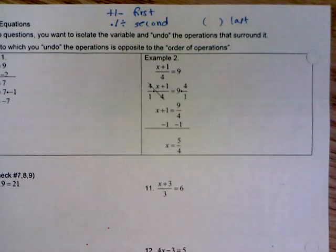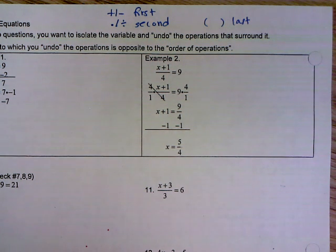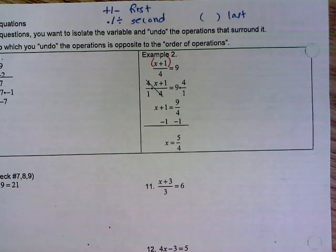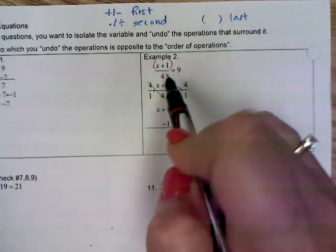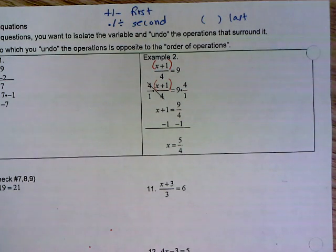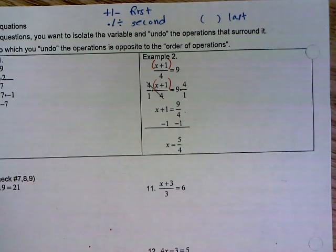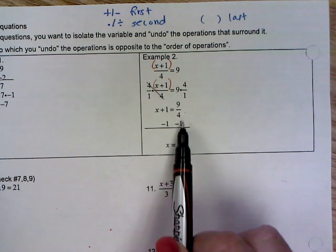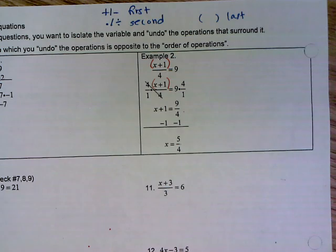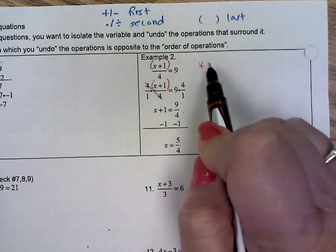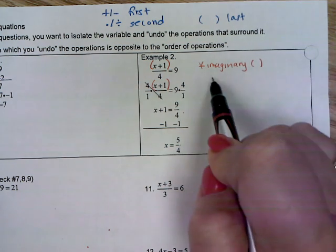Example 2 is one students tend to have a harder time with. Whenever I have something in my numerator, there is an imaginary parentheses. I'm working order of operations backwards, so I need to get rid of my denominator first by multiplying both sides by 4. This right here is in an imaginary parentheses, so I multiply both sides by 4. My denominator goes away here, and when I multiply by 4 here I get 9 fourths. Now I can undo that parentheses by subtracting 1 from both sides and get 5 fourths as my final answer. You cannot do anything with the numerator until you have multiplied that denominator — you have that imaginary parentheses, and you do it last.